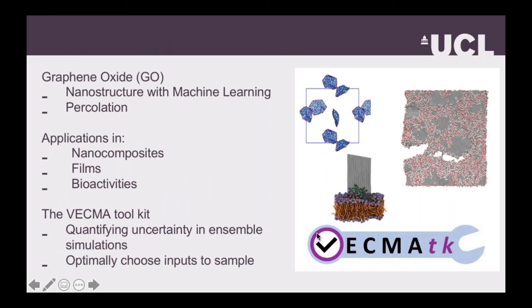This talk is split into three parts. I'm going to talk about how we generate accurate graphene oxide structures and why that's really important, and the effect on percolation and why that's a useful concept in graphene oxide chemistry. And then I'll talk about the applications that we've used these structures in.